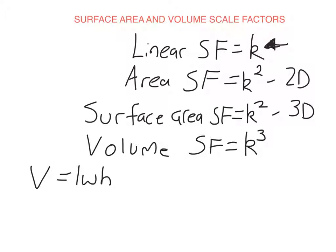If I multiply say each of these sides by 2, then the length becomes 2L, the width becomes 2W, and the height becomes 2H. So I'm multiplying by this linear scale factor three times. And that's just the same as length times width times height times 2 cubed, or 8. So that's why the volume scale factor is k cubed.